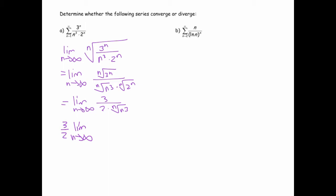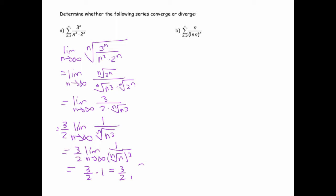The 3 halves can come out. The nth root of n cubed can be written as 1 over the nth root of n cubed. The reason that's significant is because we know that the nth root of n goes to 1 as n goes to infinity. So this limit goes to 3 halves times 1, which equals 3 halves. But 3 halves is bigger than 1, and that implies that our original series diverges.